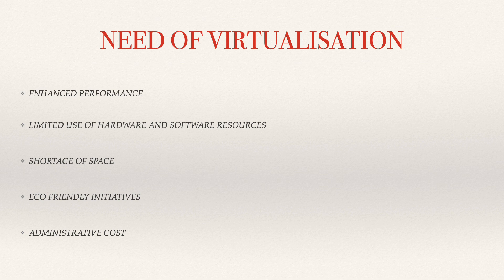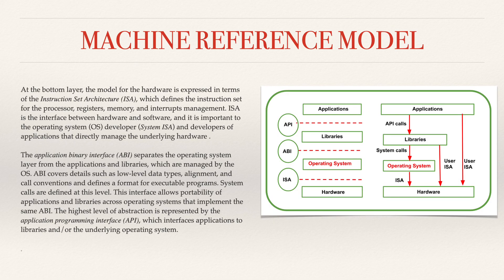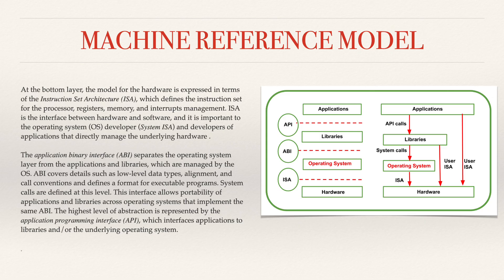Coming to the main topic for today: the machine reference model. As you can see in the diagram, we have API, ABI, and ISA. At the bottom layer, the model for the hardware is expressed in terms of the Instruction Set Architecture (ISA), which defines the instruction set for processors, registers, memory, and interrupt management. ISA is the interface between hardware and software, important to the operating system and developers who directly manage the underlying hardware.